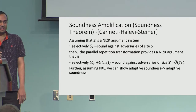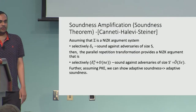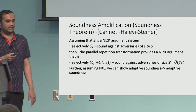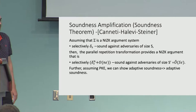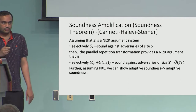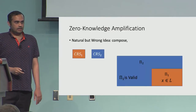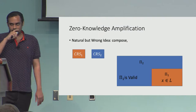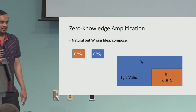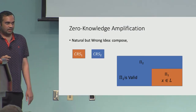In this work, we additionally show that if you are willing to assume public key encryption, then even adaptive soundness is conserved.